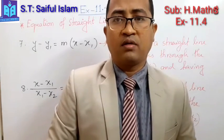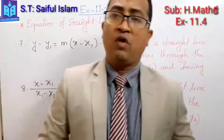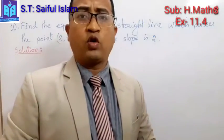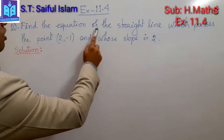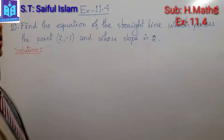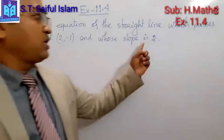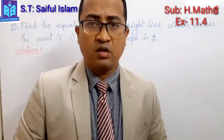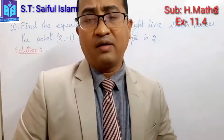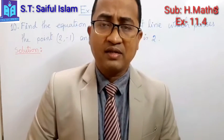We have learned eight different equations for different straight lines. Keep them in mind and apply the correct one when solving problems. Now, problem number 10: find the equation of the straight line which passes through the point (2, -1) and whose slope is 2. We are given two pieces of information: the point and the slope.